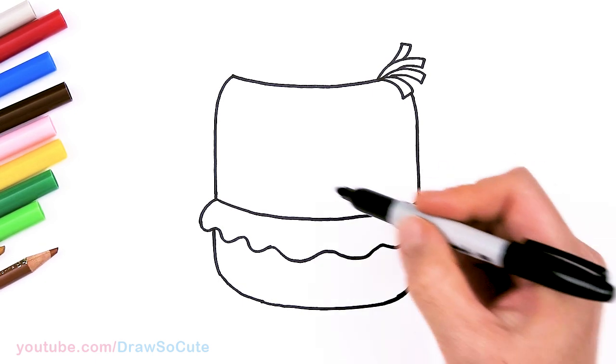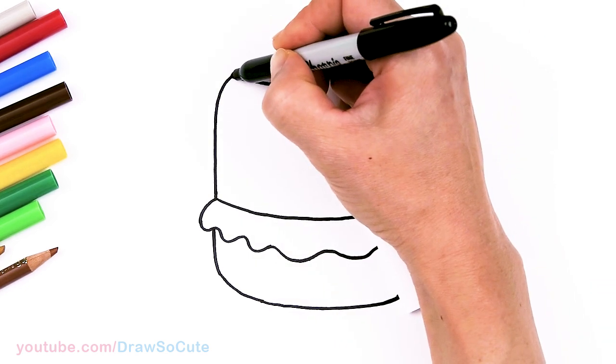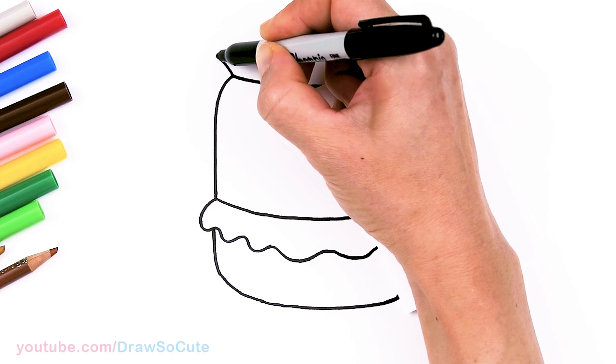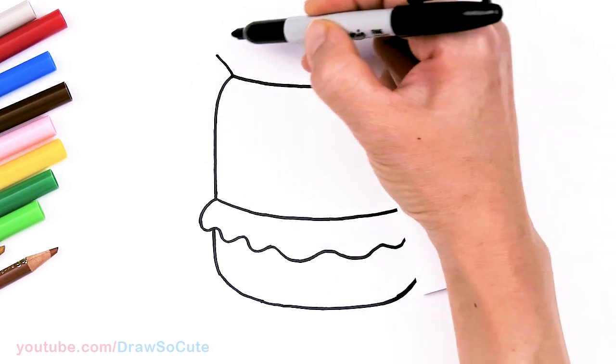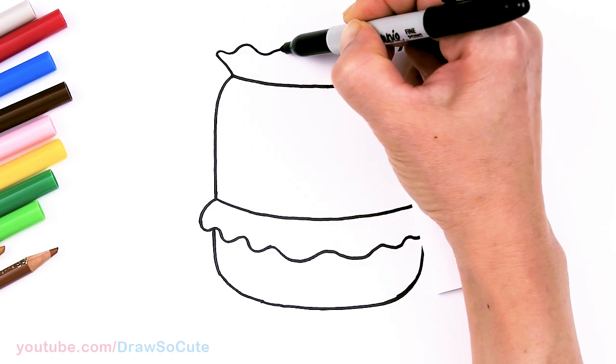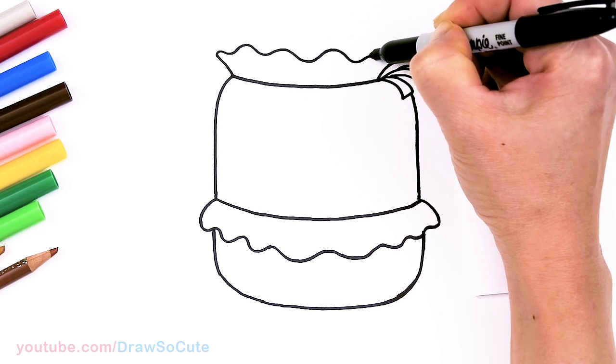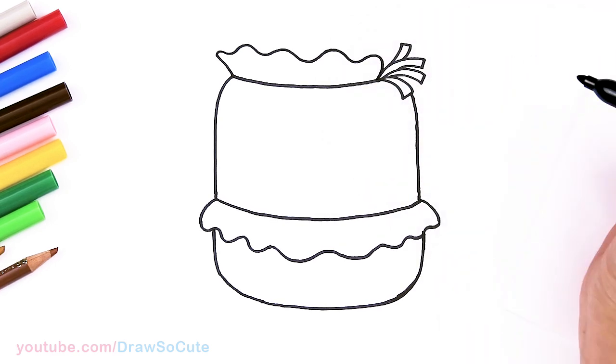Then go ahead and just connect it at the bottom with a curve. There. So we have the bottom part. Now let's draw the top. So in this area right here where we started, I'm going to come out with a slight curve. And this is going to be the lettuce. So I'm going to come in and just wobble my way across. And see about right here. I'll just tuck it in to finish it off.